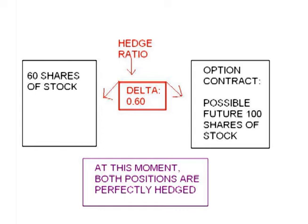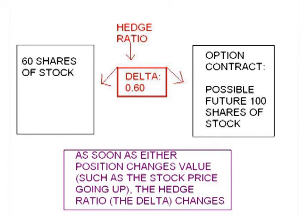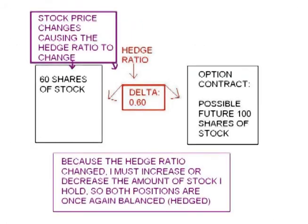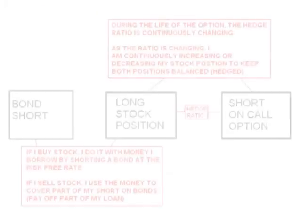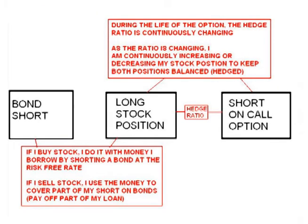Once the stock price moves even the slightest amount, the hedge ratio changes. In other words, the ratio of shares of stock to option contracts I must hold so that the positions are hedged and cannot lose money changes to a slightly different ratio. I must slightly increase or decrease the amount of stock I hold so that the ratio is once again equal. If I need to increase the amount of stock I hold, I buy the stock with money I borrow at the risk-free rate by shorting a bond. If I need to decrease the amount of stock I hold, I sell that stock and use the money to pay down my loan by covering part of my shorted bonds. This is known as dynamic rebalancing.